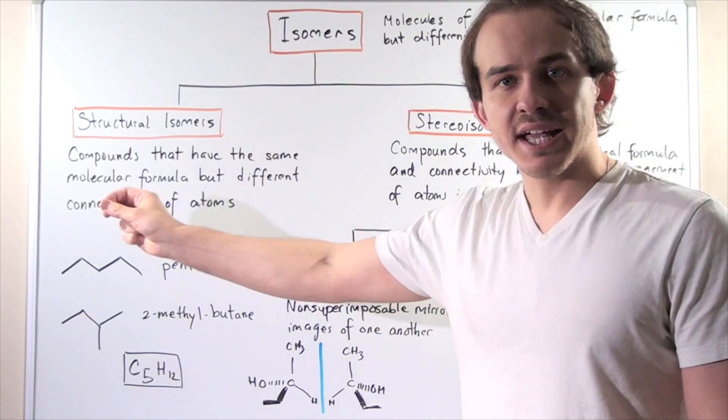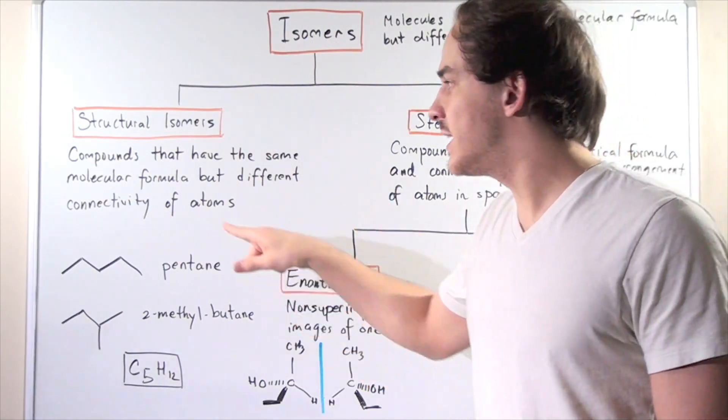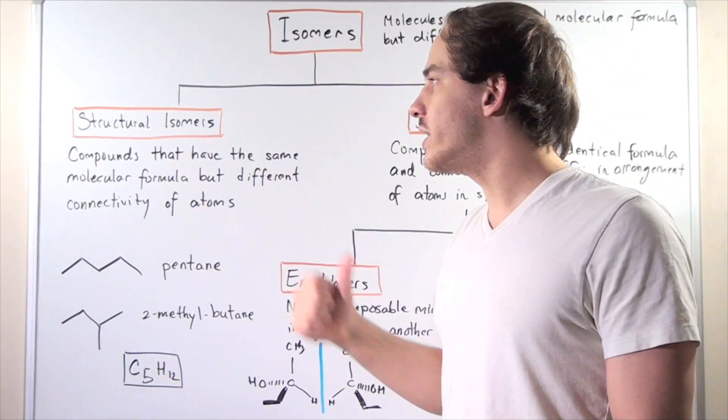Structural isomers are compounds that have the same molecular formula but different connectivity of atoms. Let's look at one example of a structural isomer.